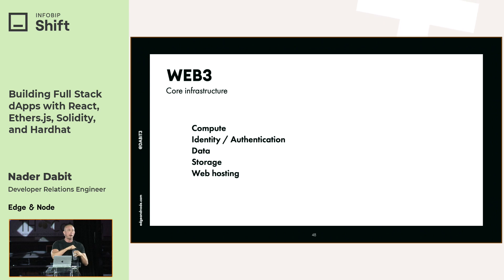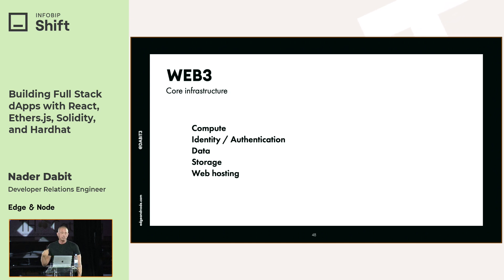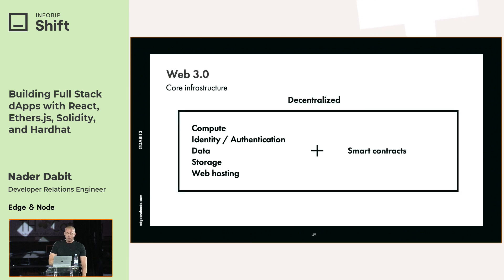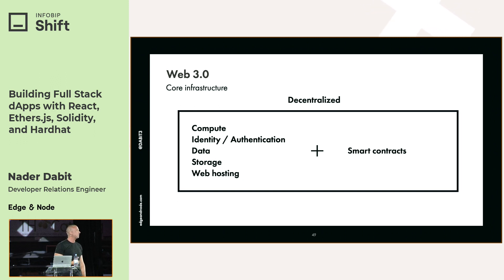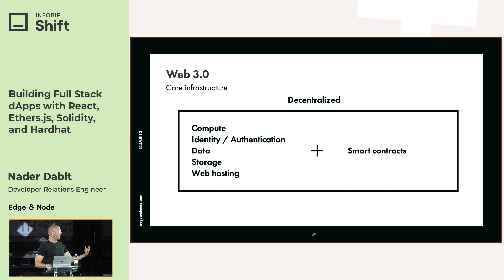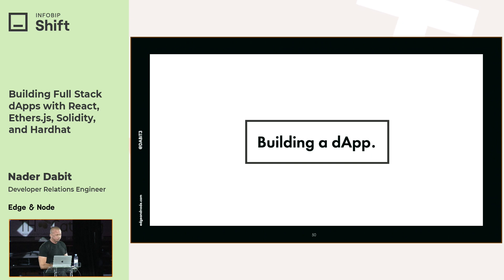So let's get to building. When you think of a typical web app, I think about compute, identity, data, storage, and web hosting. The only difference in Web3 is that you do all these things in a decentralized manner — you find decentralized protocols that accomplish these tasks. You also have the addition of smart contracts, which enable programmable money and programmable state in a decentralized manner. You don't have to create complex infrastructure for sending payments — you can send a payment in one line of code.